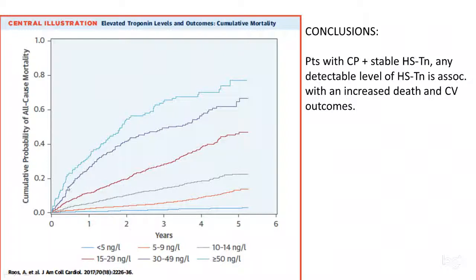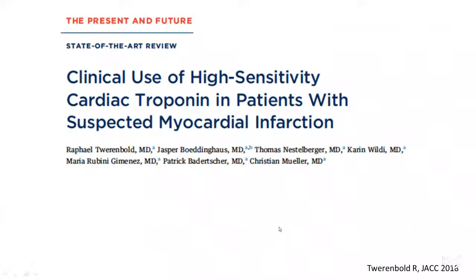There was a very significant correlation with outcomes. Patients who had a troponin of more than 50 had the worst mortality. High sensitivity troponin levels correlated very significantly with bad outcomes — if a troponin is higher than 50, there is a very high likelihood that the patient will die from an MI. This literature is very new, arising from about two years ago, with no true consensus guidelines yet, but a 2018 review article provided some recommendations.